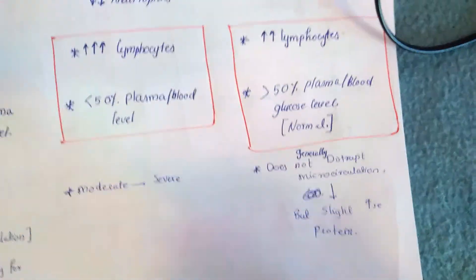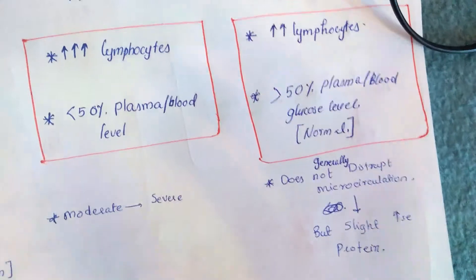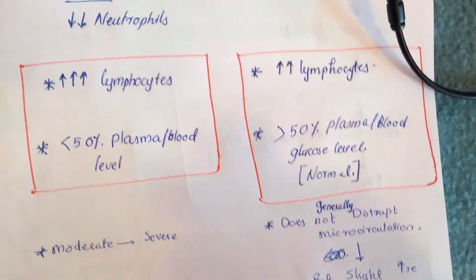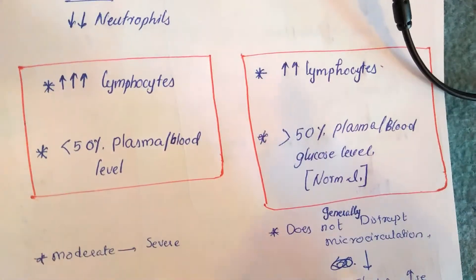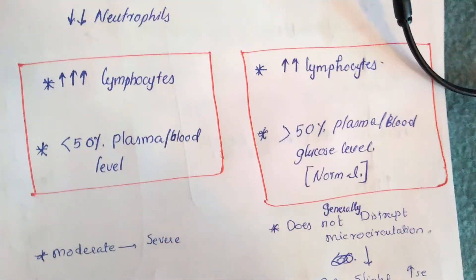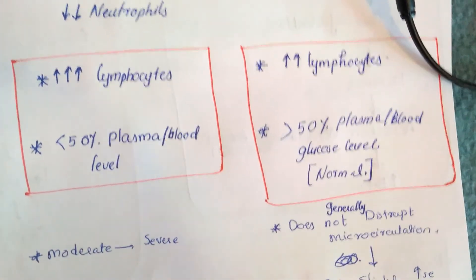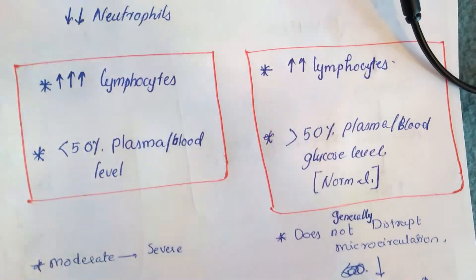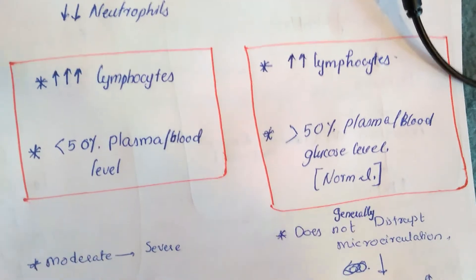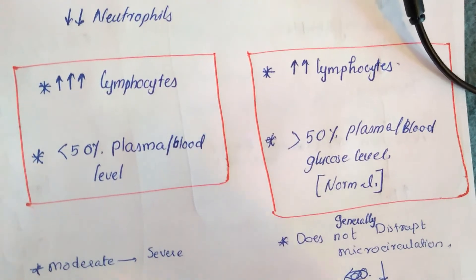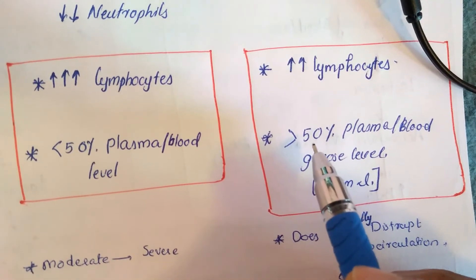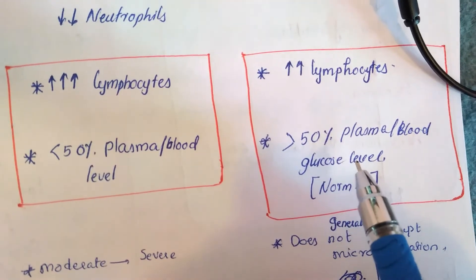We can now differentiate these meningitis types. When CSF from lumbar puncture shows a high level of lymphocytes, it can be confusing — is it viral or tuberculosis meningitis? We then analyze the glucose level: if it is less than 50% of plasma or blood level, it is tuberculosis meningitis. If the glucose is normal or greater than 50% of plasma or blood glucose level, it is viral meningitis.